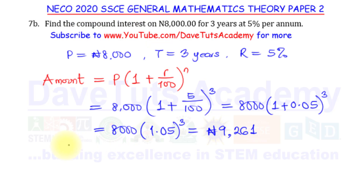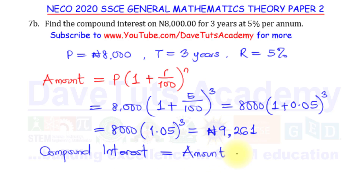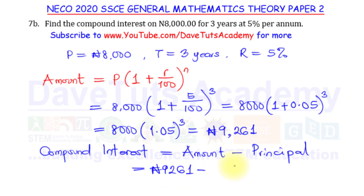But look at the question — we also have to find the compound interest. The compound interest is not the amount we just evaluated. The compound interest is this amount minus the principal that was originally deposited. So the compound interest is going to be the amount, nine thousand two hundred and sixty one, minus the principal, which is eight thousand.